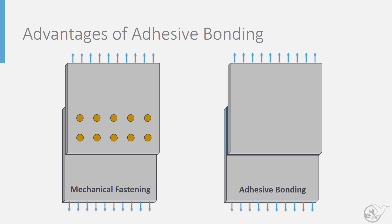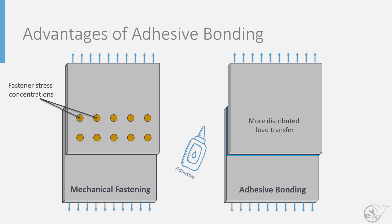Adhesive bonding, like welding, provides a distributed means of transferring load from one part to another. We can eliminate the stress concentrations induced by fastener holes and spread the load transfer out more evenly over the joint, making it a very attractive joining option. However, rather than relying on the melting and fusing of the parts as with welding, adhesive bonding uses an additional material to glue the two parts together. This can eliminate some of the material restrictions encountered in welding, but introduces its own set of challenges to deal with.